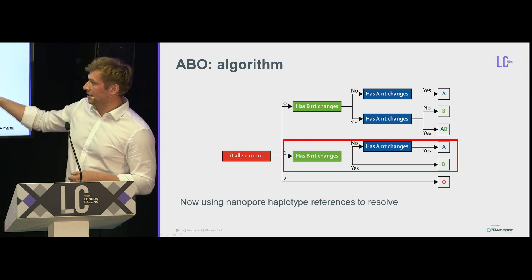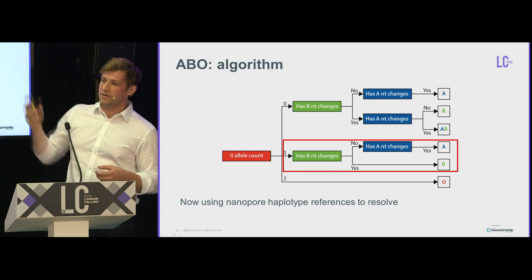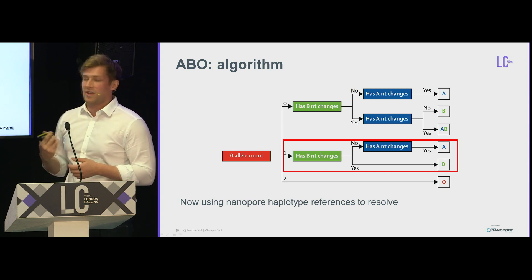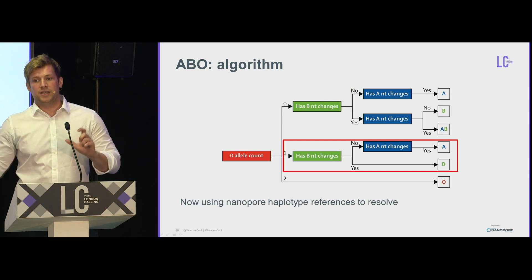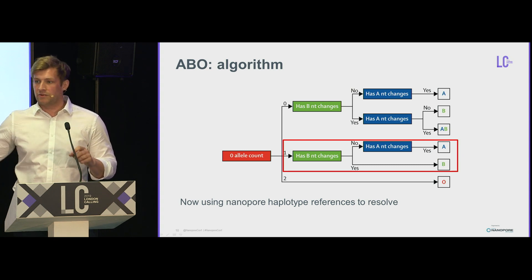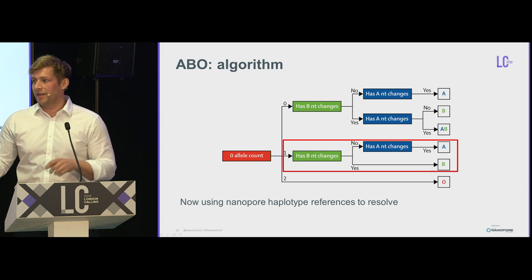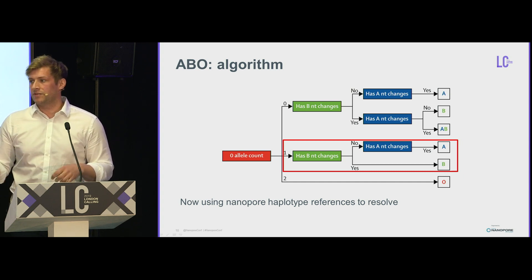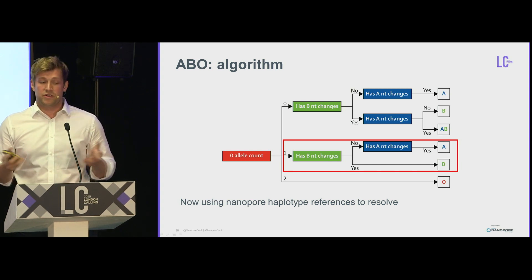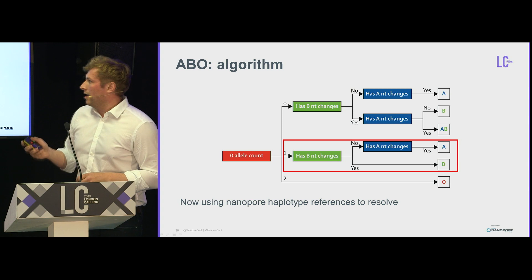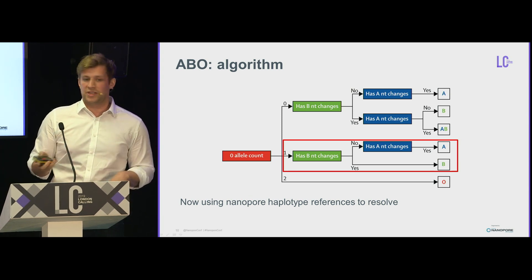This is where the algorithm was tripping up for those ABO discrepancies. We've used the Nanopore haplotypes to write an algorithm that, when it sees this in other sequencing or array data, can detect when this is likely occurring. Then it doesn't issue a type for those individuals and flags that they need serological confirmation.